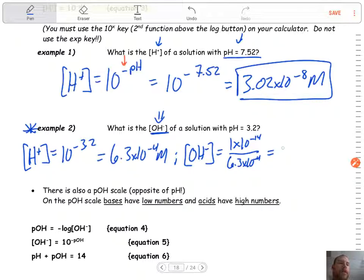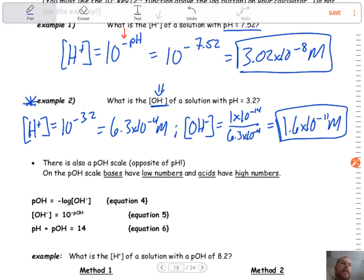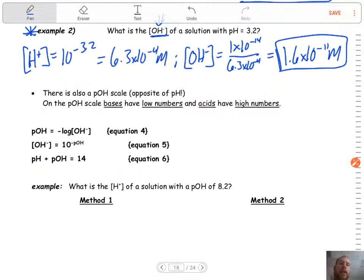So we've got to take one more step and use Kw. 1×10^-14 divided by 6.3×10^-4. And we should get a final answer of 1.6×10^-11 molar. If I went a little quick through that last example, pause it, call me over. I can help you with it. In the last part of this lesson, video 3, we are going to start talking about the other scale, which is the pOH scale. But we'll save that for next time.